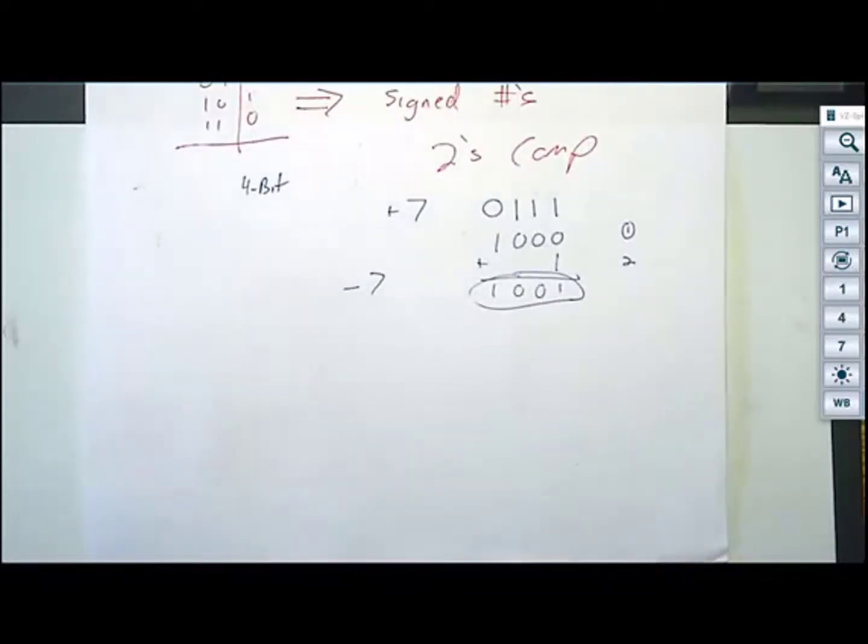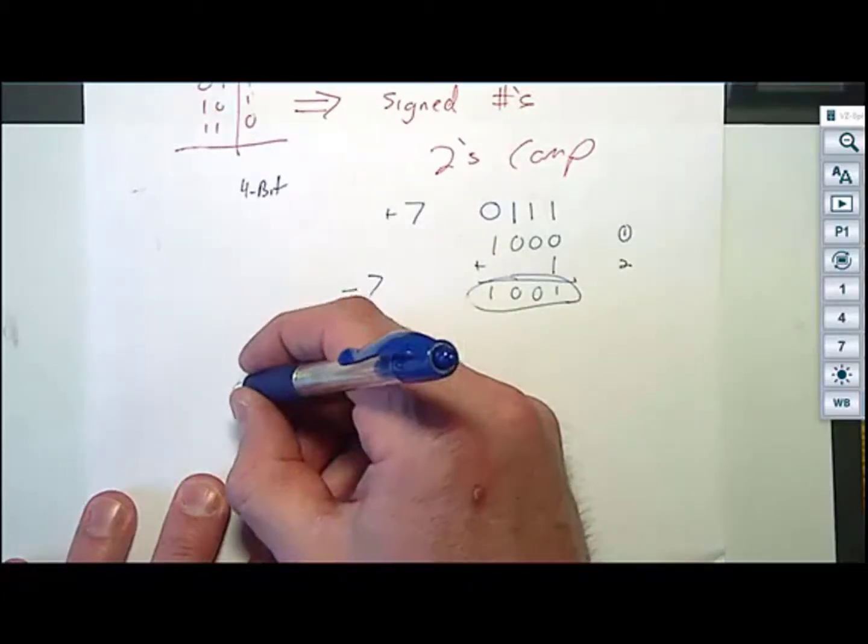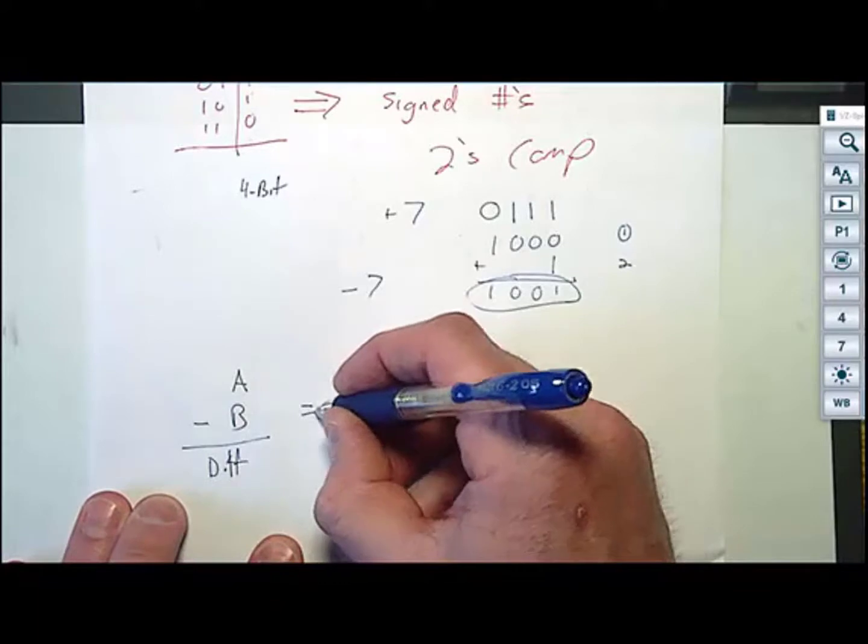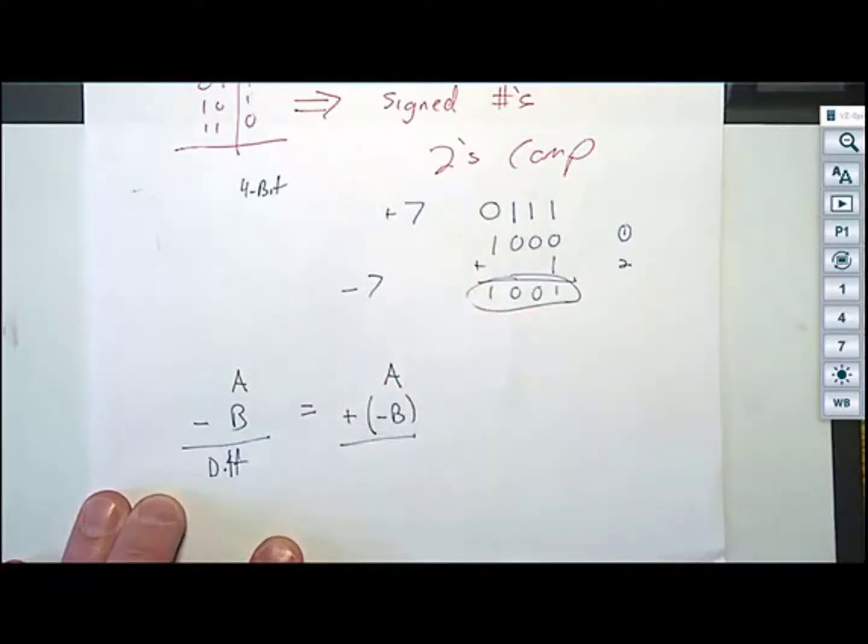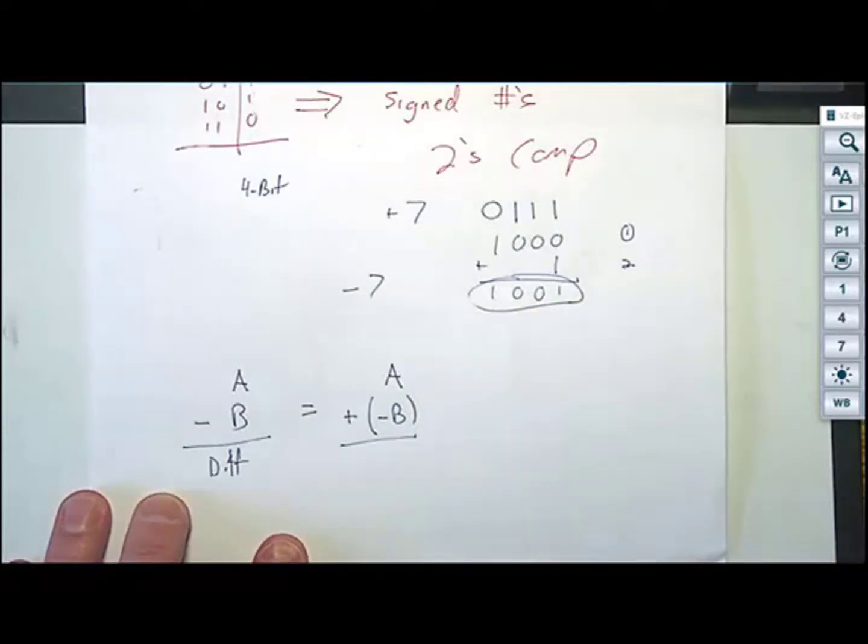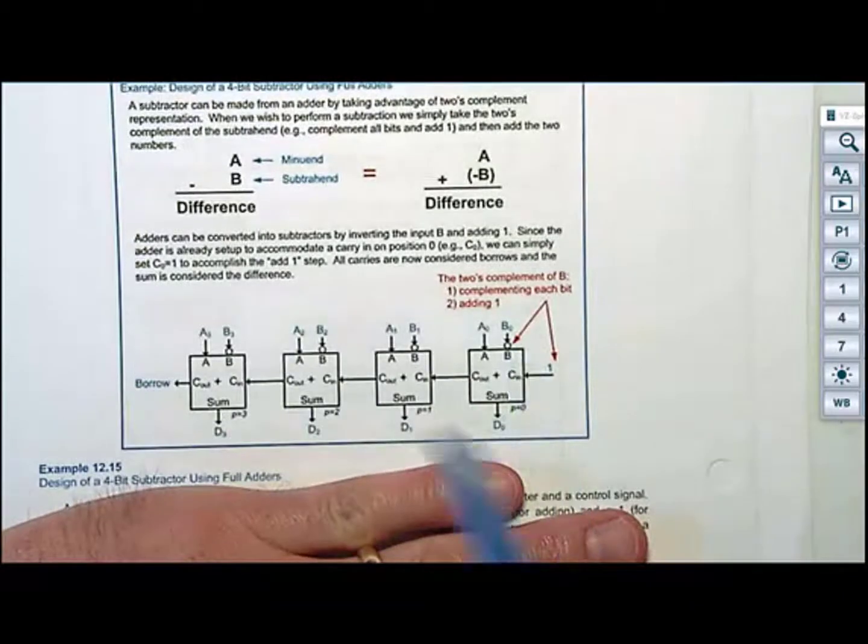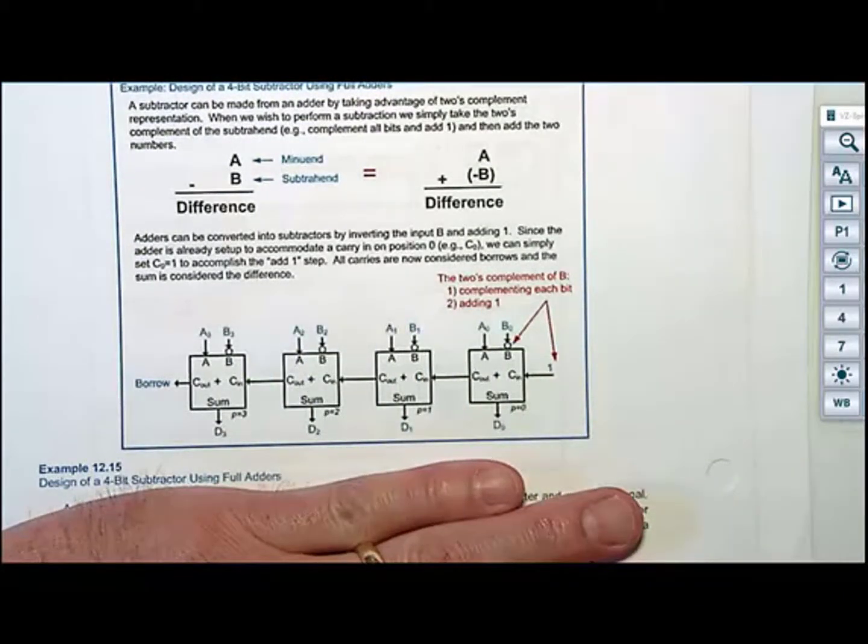I come up to you and I say the following. If I took A subtract B and I got the difference, is that the same as A plus negative B? The answer is yes. It is absolutely correct. Those are equivalent to each other. This means what I want to do is I want to take my adder circuit, and I want to use it to perform subtraction by performing two's complement on the input B, and then I just say, go.